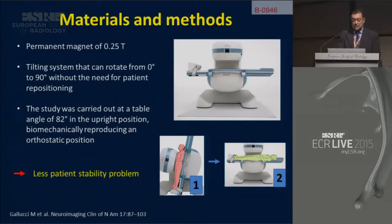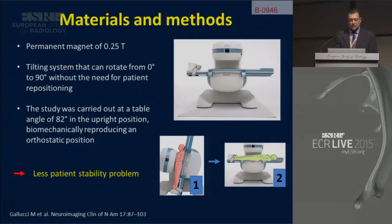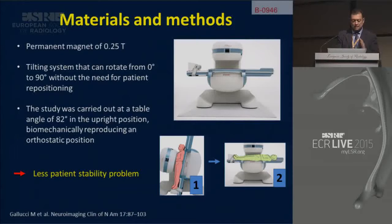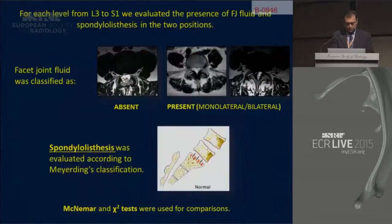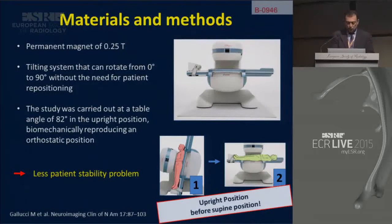Each examination was performed in both standard supine and orthostatic positions. We utilized a permanent magnet of 0.35 Tesla with a tilting system that can rotate from 0 to 90 degrees without the need for patient repositioning. The study was carried out at a table angle of 82 degrees in the upright position, reproducing an orthostatic position while reducing patient stability problems.